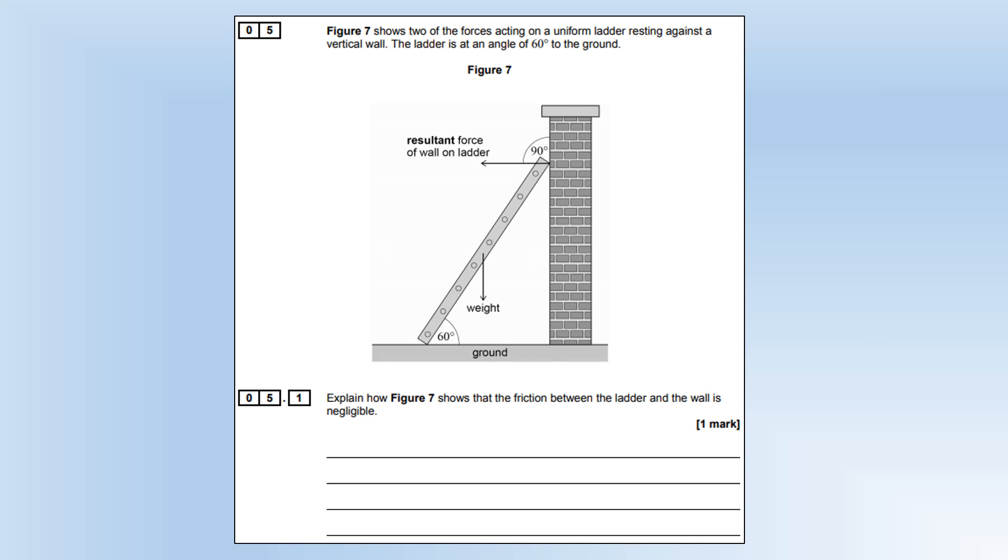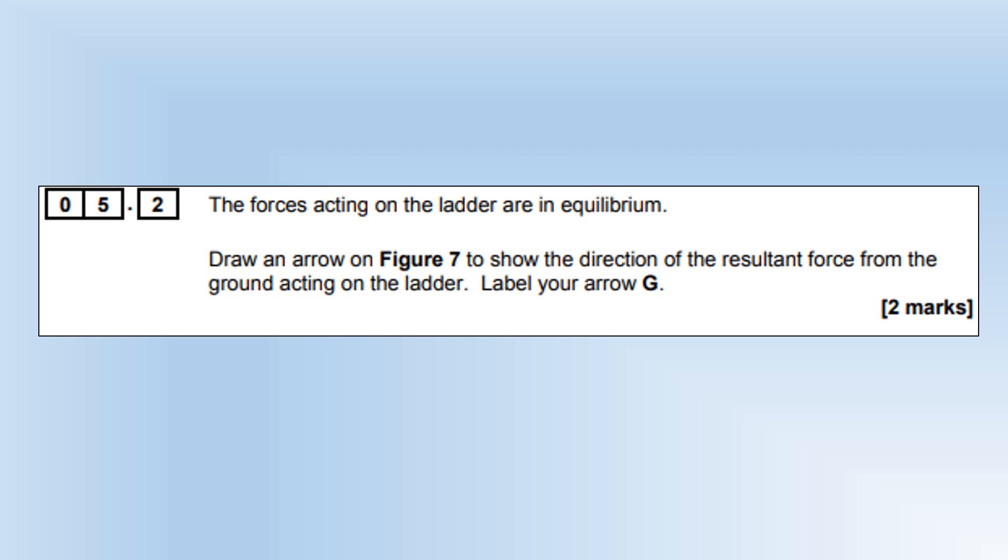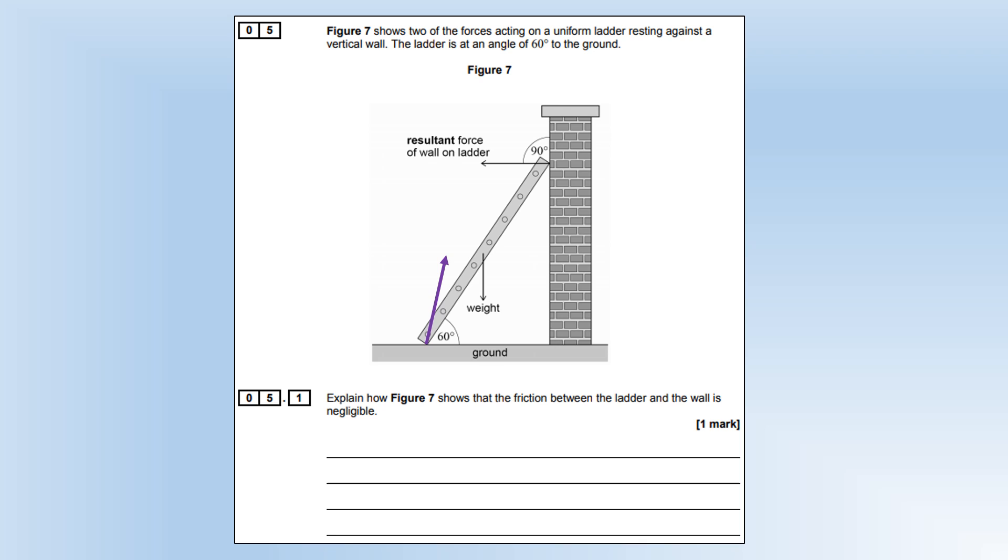Question 5: we've got a ladder propped up against a wall at 60 degrees to the ground. We've got a force at the top, the resultant force of the wall on the ladder shown acting horizontally, and we've got the weight force of the ladder shown as well. Explain how Figure 7 shows that the friction between the ladder and the wall is negligible. Friction always acts parallel to a contact surface, but the resultant force is clearly perpendicular, which means there's no component of force parallel to the wall, so there's no friction. Draw an arrow on the diagram to show the direction of the resultant force from the ground acting on the ladder. There are going to be two forces acting: there'll be a normal contact force upwards and then there will be a frictional force acting to the right, giving us an arrow pointing diagonally up to the right.